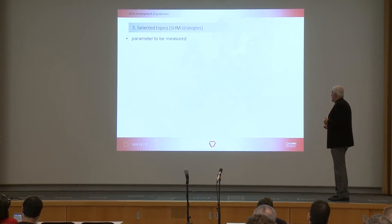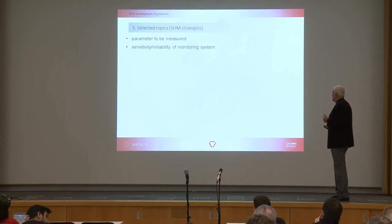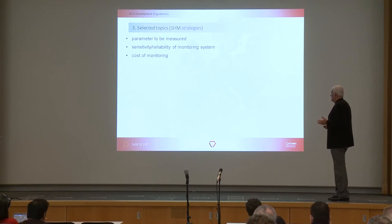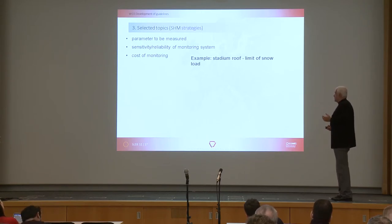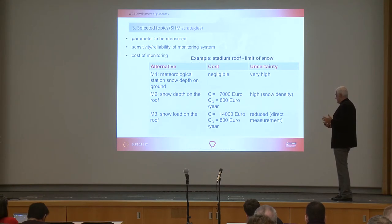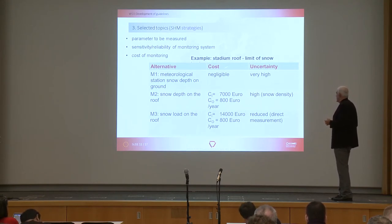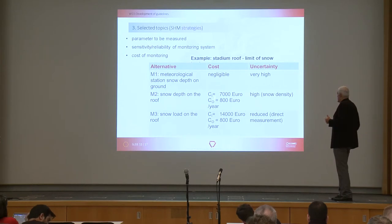Other selected topics are the strategies: the parameter to be measured, the sensitivity or reliability of your monitoring system (which can have uncertainties), and the cost of monitoring. A typical simple example is a stadium roof where, as Johan mentioned, you can have three different alternatives with different costs and of course different uncertainties.